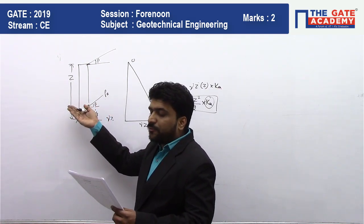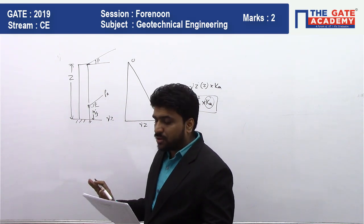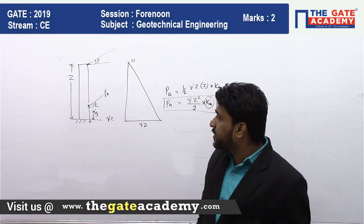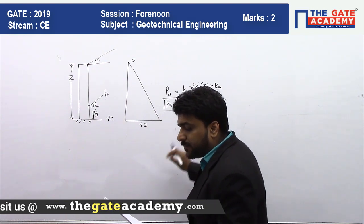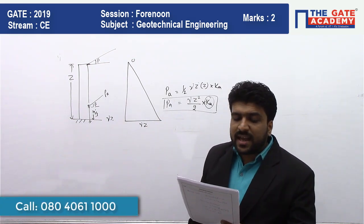So statement number one is Pa will act at h by three from the base at phi angle with the horizontal. Wrong, because phi angle is not in the picture. Phi angle will come into the picture when you are calculating the value of k. Option B is Pa at h by two from the base. Wrong, nothing to read again because h by two is not possible.